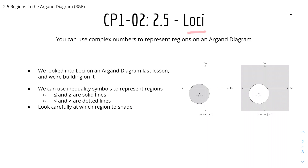You can use complex numbers to represent regions on an Argand Diagram. In our last few lessons we looked into loci, and this lesson is basically about shading the regions. We looked at loci on the Argand Diagram last lesson and we're building on it.